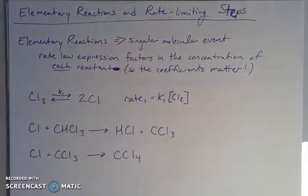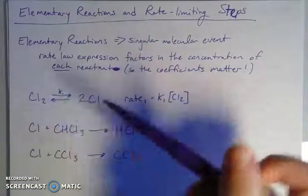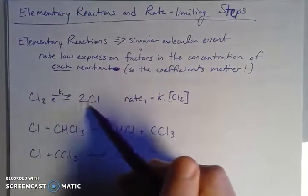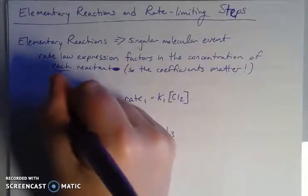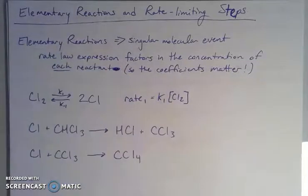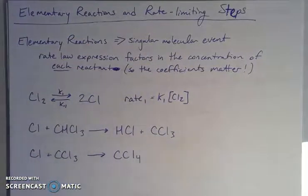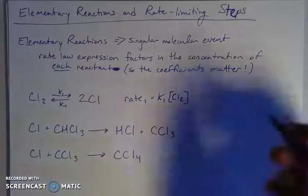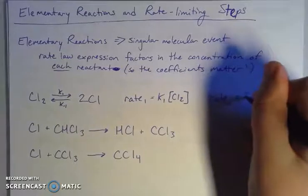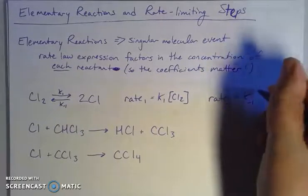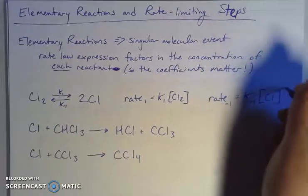So I'm raising it to the first power — it's based on the number that are reacting. If I think about the rate of my reverse reaction, these two chlorine atoms forming my diatomic chlorine, let's call that rate minus 1 with constant k₋₁. The rate in the reverse reaction is equal to my rate constant times the concentration of chlorine atoms squared.